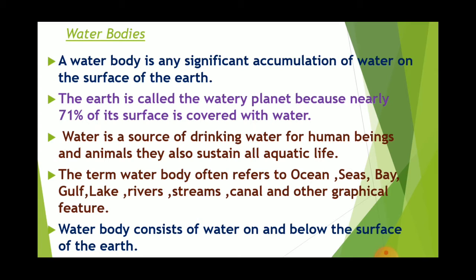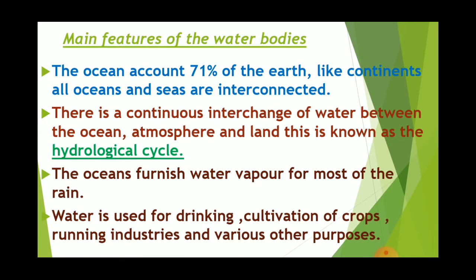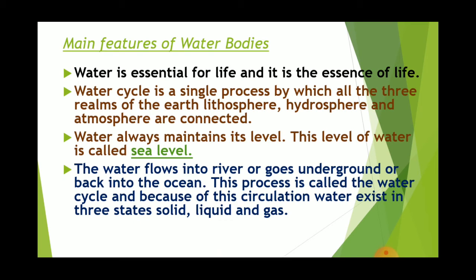A water body consists of water on and below the surface of the earth — it includes not just surface water like seawater, river water, or lakes, but also underground water. The ocean accounts for about 71% of the earth. Like continents, all oceans and seas are interconnected. There is a continuous interchange of water between the ocean, atmosphere, and land, called the hydrological cycle or water cycle. Water is used for drinking, cultivation of crops, running industries, and various other purposes. Water is essential for life — it is the essence of life.